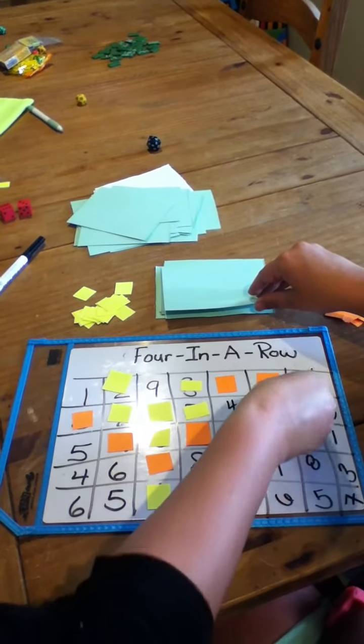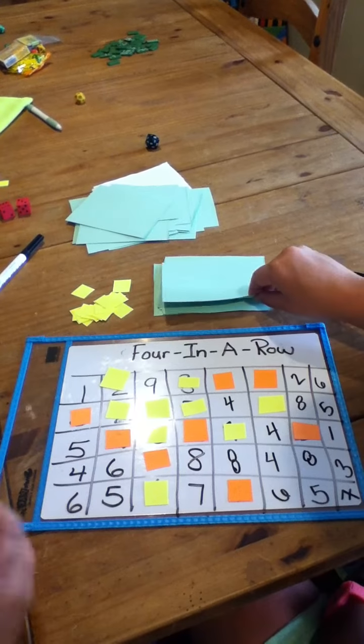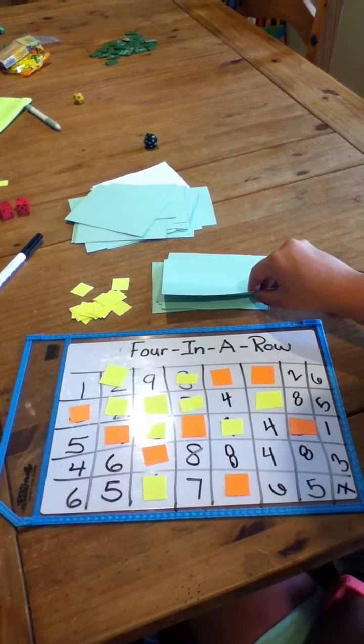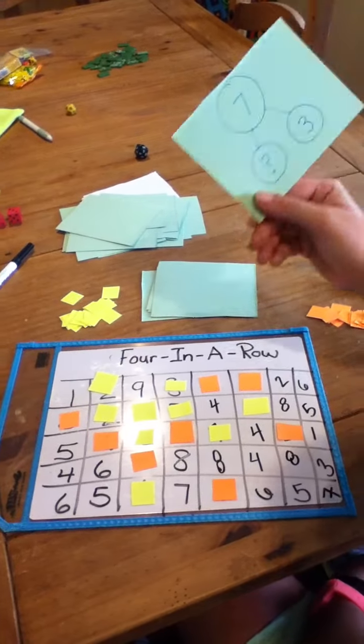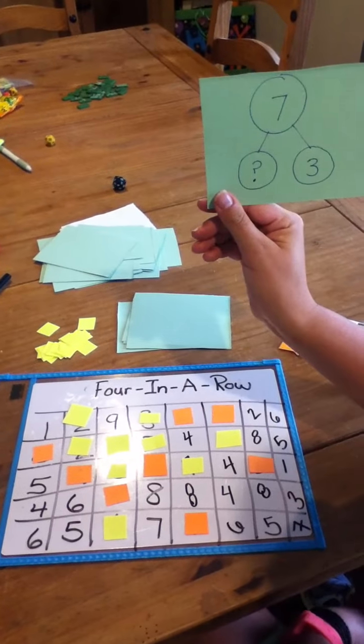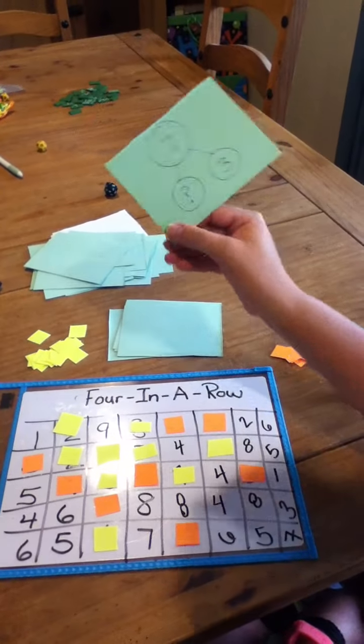So one of the things, too, when you're playing with your child, you might want to have them figure out how the strategy that they're using to kind of figure it out. Seven is my whole. Seven is my whole. Four plus three is seven.